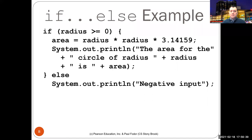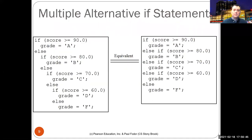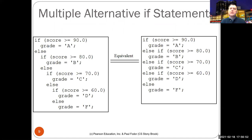Now we often have a cascade of if statements. For example, suppose we want to compute a letter grade from a score of zero to one hundred and assign it to the variable grade.